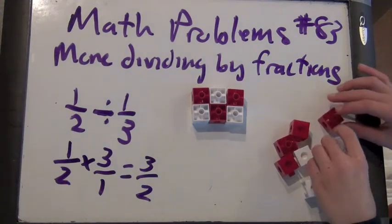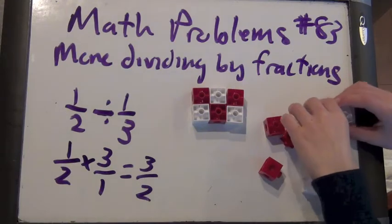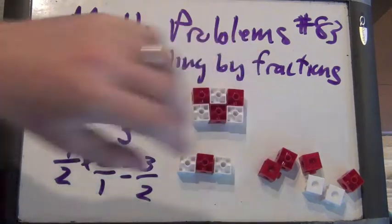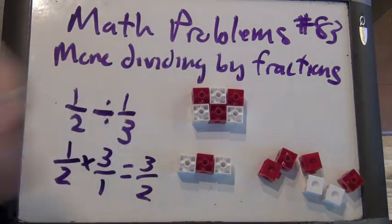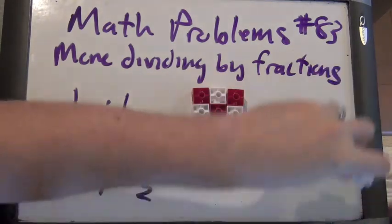It would be this. Okay, awesome. That's 1 half of it. And what is 1 third of that rectangle? Would be this. Just 2 blocks, right? Yeah.